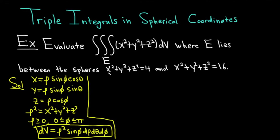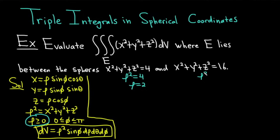The sphere x squared plus y squared plus z squared equals 4 can be represented as rho squared equals 4. If you take the square root of both sides, you get a plus or minus, but since rho is greater than or equal to zero, you only care about the positive root. So you write this as rho equals 2. Likewise, rho squared equals 16 gives rho equals 4 — a nice way to simplify the equation of a sphere.